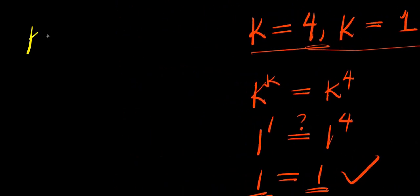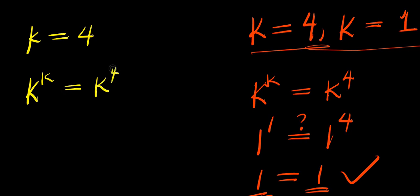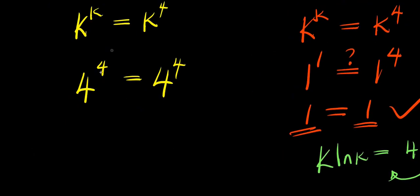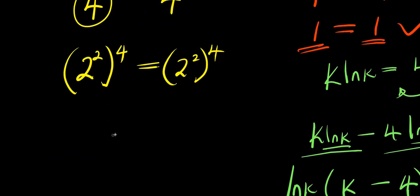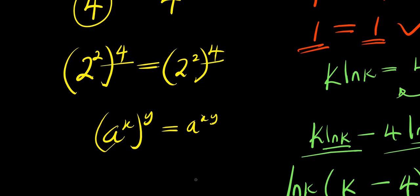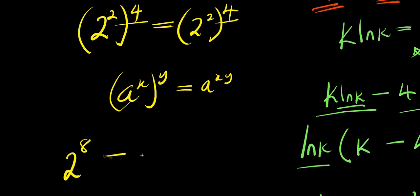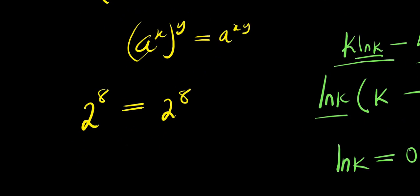Now consider k equals 4: substituting gives 4^4 equals 4^4. We can simplify since 4 equals 2^2, so 4^4 equals (2^2)^4. Using the rule (a^x)^y equals a^(x times y), we get 2^8 equals 2^8, and 2^8 is 256. So 256 equals 256, confirming k equals 4 satisfies the equation.